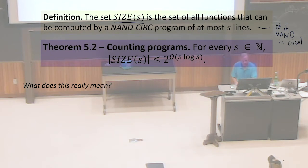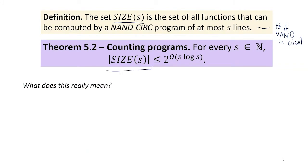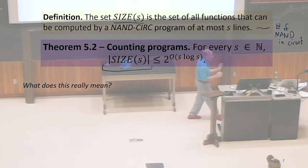So what the theorem is saying is for every natural number, the number of functions that can be computed by a NAND circuit of that size - SIZE(s) is a set of functions, and we're counting the size of that - and we're saying it's less than 2 to the big O(s log s).